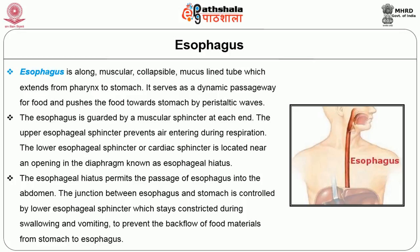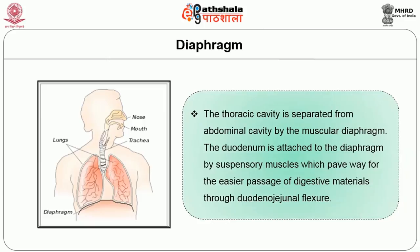The junction between the esophagus and stomach is controlled by the lower esophageal sphincter, which stays constricted to prevent backflow of food materials from the stomach to the esophagus during swallowing and vomiting. The thoracic cavity is separated from the abdominal cavity by the muscular diaphragm. The duodenum is attached to the diaphragm by suspensory muscles, which allow for easier passage of digestive materials through the duodenojejunal flexure.